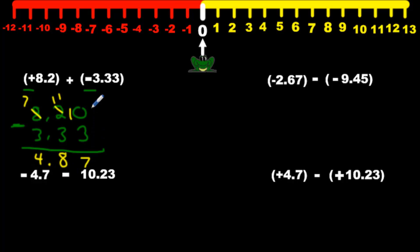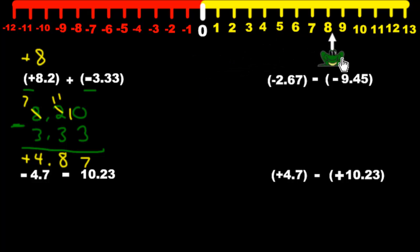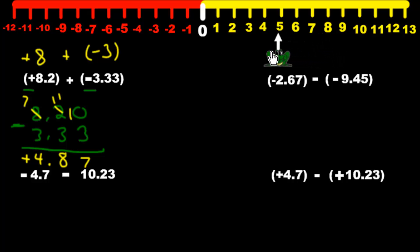Now that we have 4.87, look at the numbers again ignoring the signs — we just look at 8 versus 3. 8 is bigger and it's positive, so it keeps its sign: positive. That makes sense because when you have 8.2, that's about positive 8. Our frog moves to positive 8, then we add about three negatives, so it becomes less positive and hangs around the 5 mark. That 4.87 is close to 5 and it is a positive value.